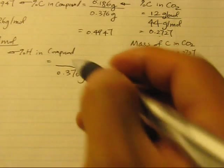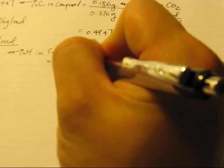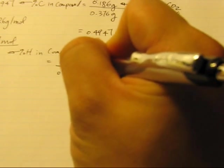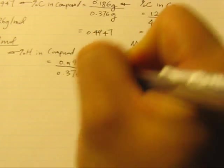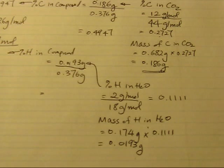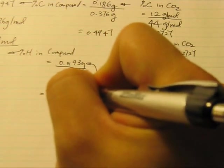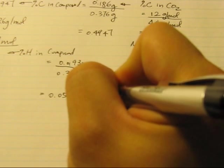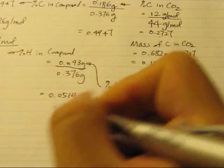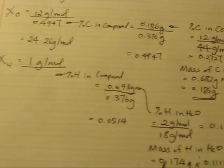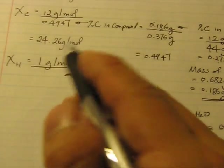And then we can put this number right here. 0.0193 grams. And then if you put this into your calculator, you will find out that this is equal to 0.0514 or 5.14%. Now, you can put this number right here.